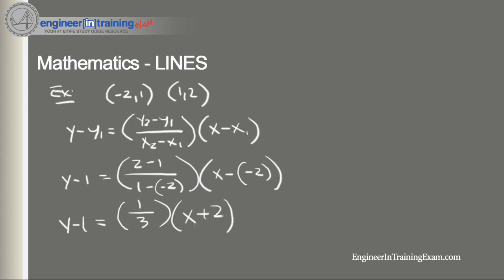Multiplying that through, we get 1 third x plus 2 thirds, and adding 1 to each side to get y by itself.